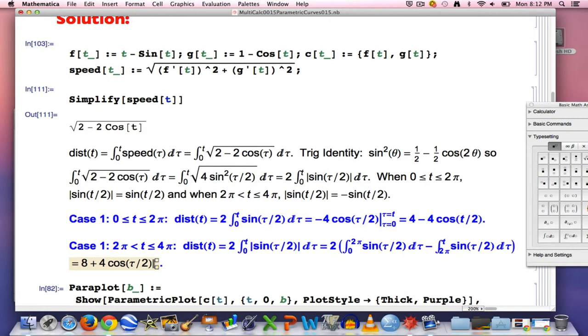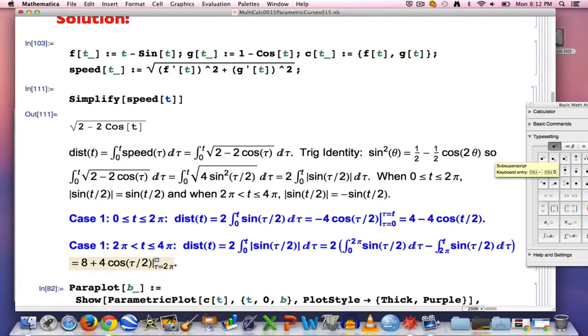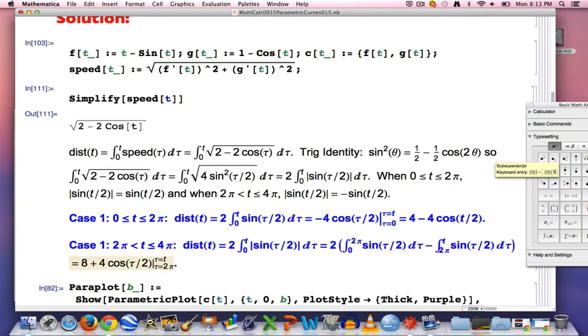All right. When you plug in τ equals 2π, you get 2π/2, which is π. Cos(π), again, is negative 1. So ultimately, what you're going to get here is 8 plus 4cos(t/2) minus negative 4, which will be plus 4. This 8 will become an 8 plus 4 is 12. So this is going to be the formula that you get in case 2.